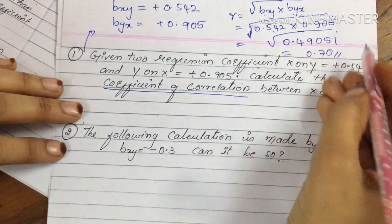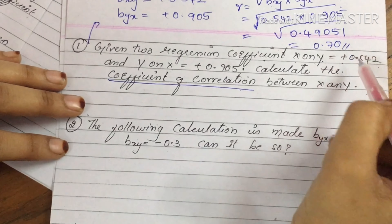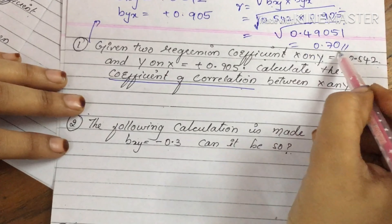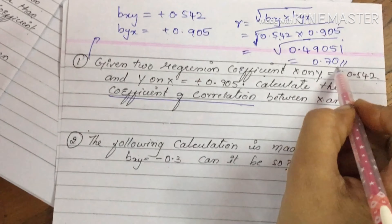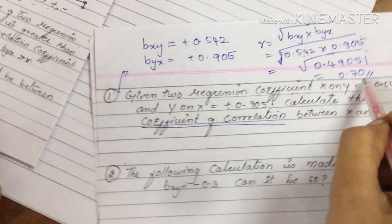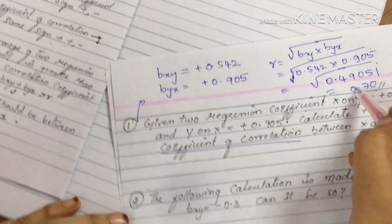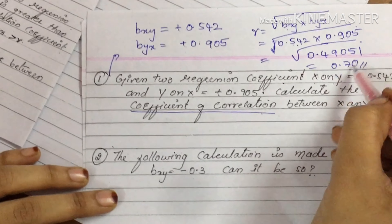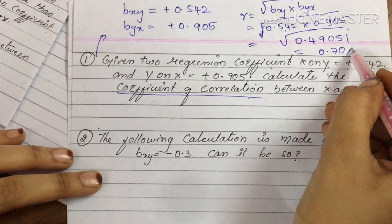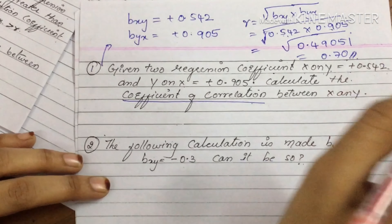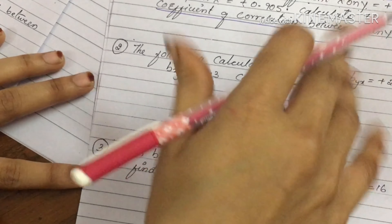Now verify using the third property: the value of r should be between plus 1 and minus 1. Our r value is 0.70, which is between plus 1 and minus 1 — so it is correct.